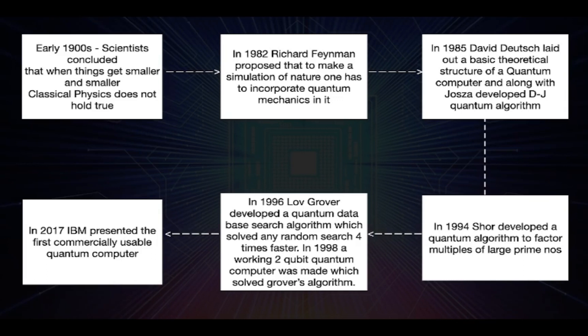In 1982, Richard Feynman proposed an interesting idea that if you want to make a simulation of nature, you have to incorporate quantum mechanics in it. Therefore, instead of bits — zeros and ones in modern computers — a quantum computer would have qubits. A qubit is a photon or any other small particle with quantum mechanical properties that can represent zero and one at the same time. This is how computers would mimic nature's probabilities.